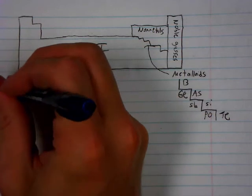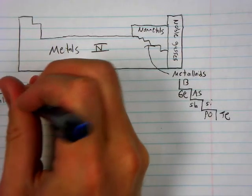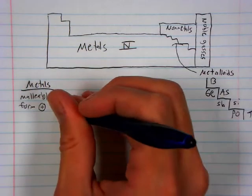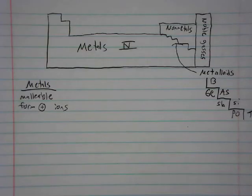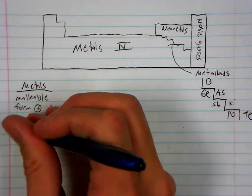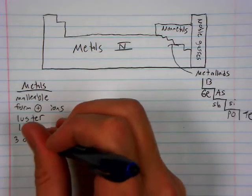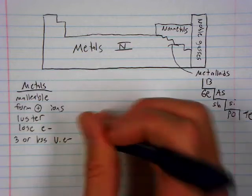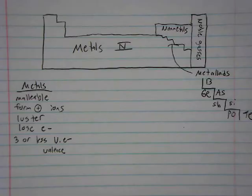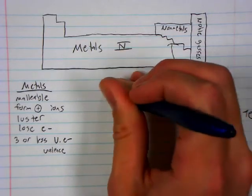And then we have to know our different properties of metals and non-metals. I would probably memorize these. We know that metals are malleable, which means they bend without breaking. We did a lab freshman year where you looked up properties of metals and non-metals. Metals like to form positive ions, which means if they become more positive, they actually like to lose electrons. Metals have luster, which means they're shiny. And in general, they have three or less valence electrons. Valence is spelled V-A-L-E-N-C-E. A valence electron is an electron on the outermost part of the atom.